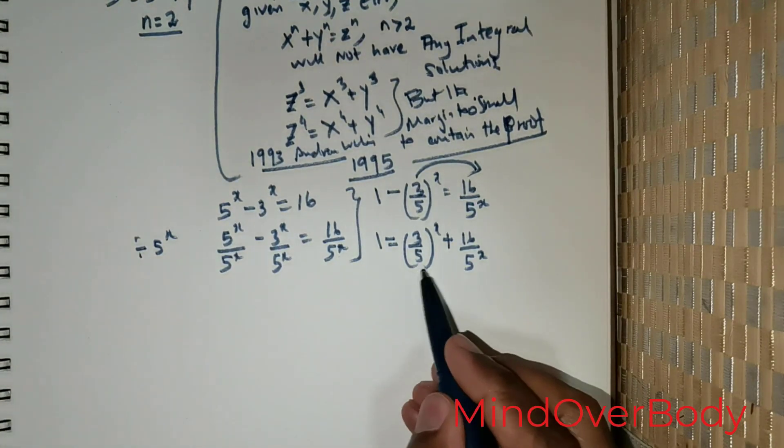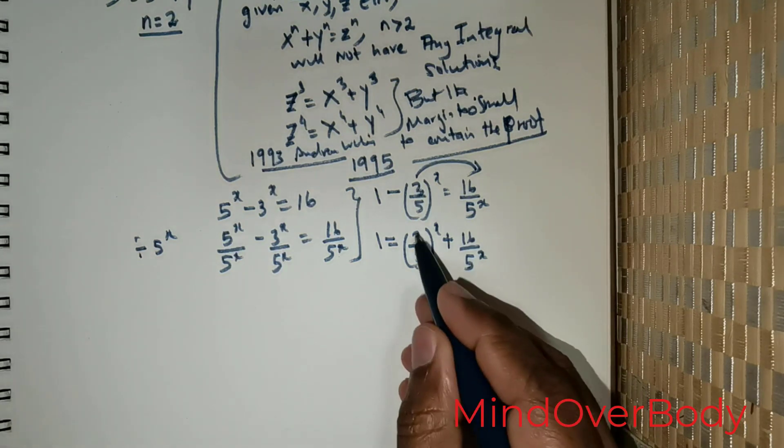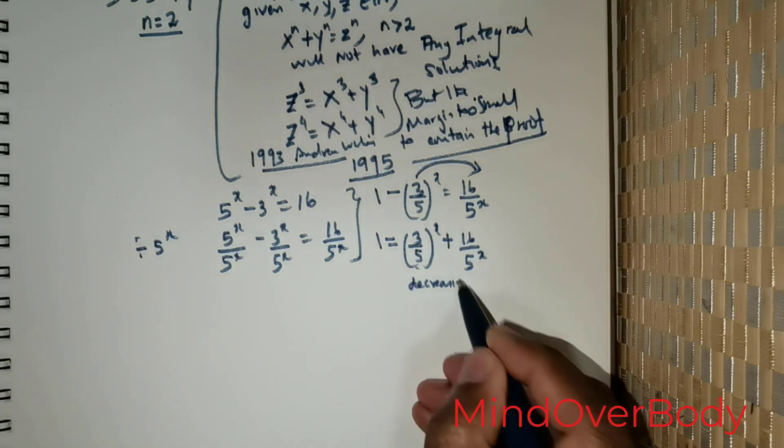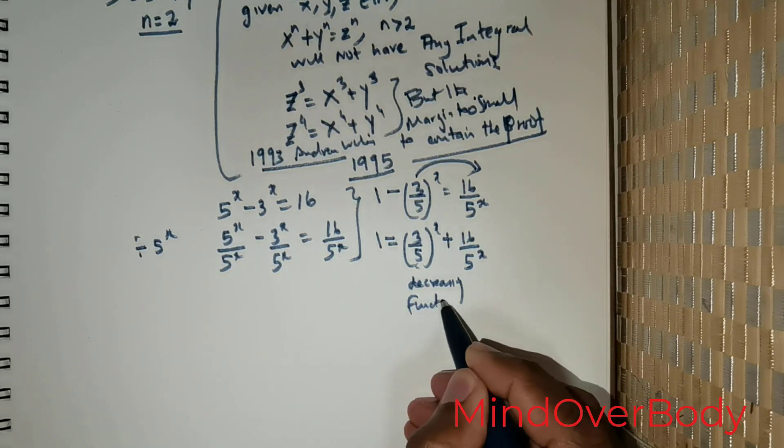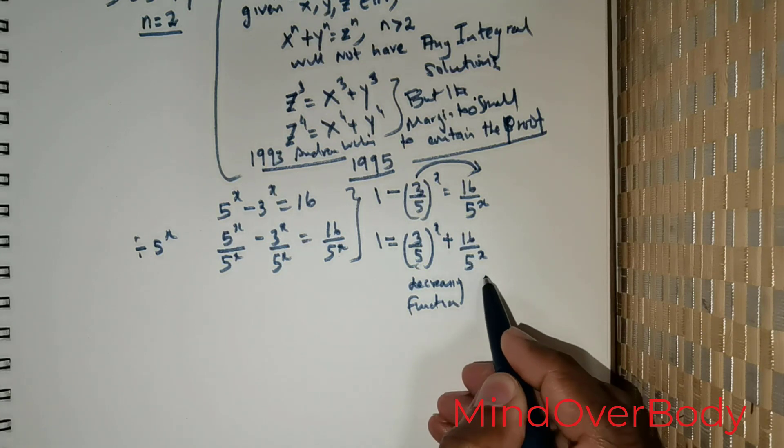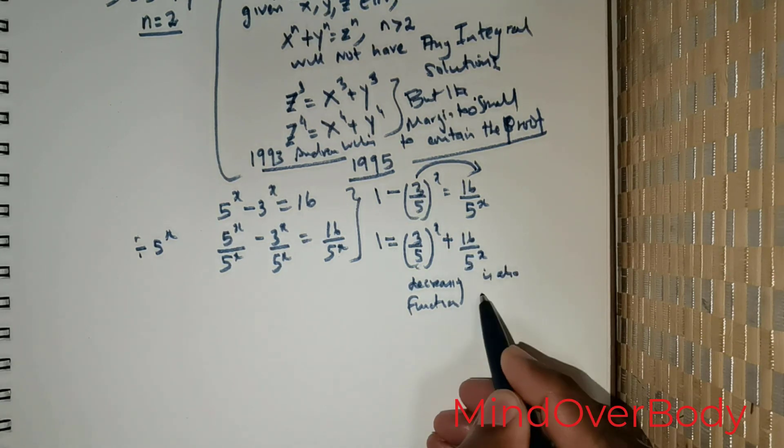Now, if you were to see these two functions, clearly (3/5)^x is a decreasing function, and 16/5^x is also a decreasing function for all values of x.